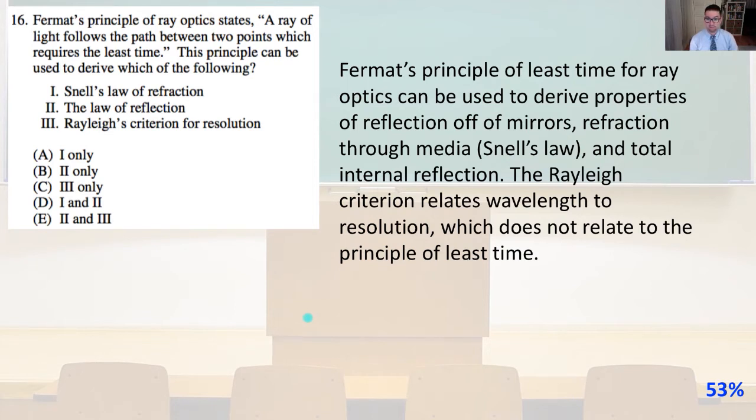Fermat's principle of least time for ray optics can be used to derive properties of reflection off of mirrors, refraction through media, which is Snell's law, and total internal reflection. The Rayleigh criterion relates wavelength to resolution. It does not relate to the principle of least time. So therefore, it is only going to be D, number 1 and 2.